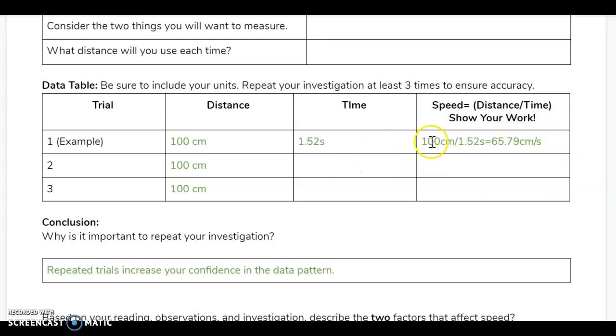For all of them it's going to be distance divided by time, which is going to give you your speed. Notice if you're using centimeters for your distance and seconds for your time, your speed would be centimeters per second. If you're using inches and seconds, it would be inches per second. You always want to keep your units for speed consistent with the distance and the time that you are calculating.